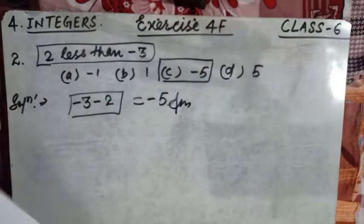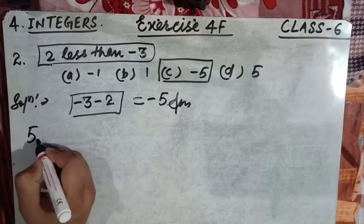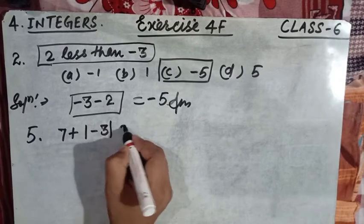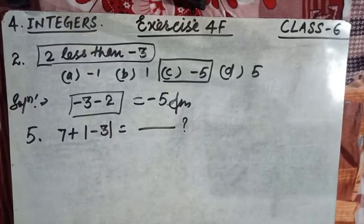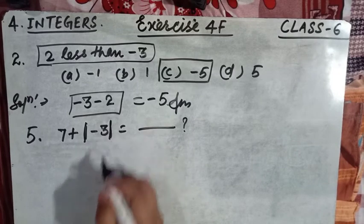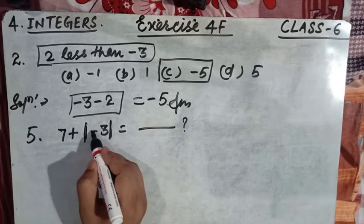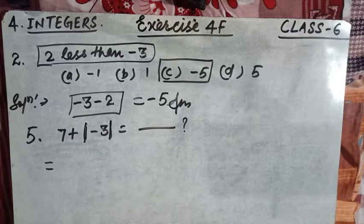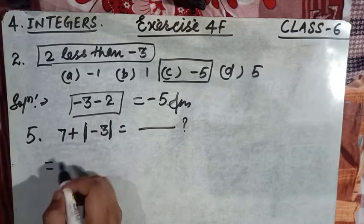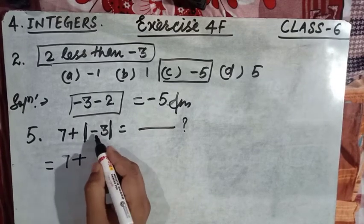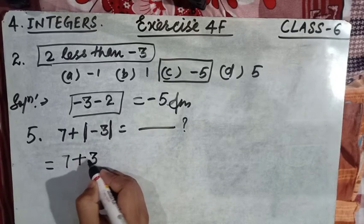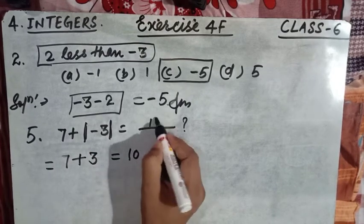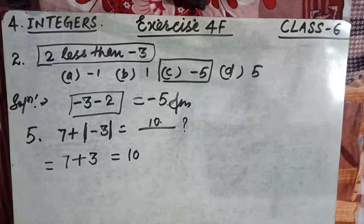Question number 5 says: seven plus the modulus of minus three. The numbers retained within two vertical bars represent the modulus. The modulus of any number always gives a positive value. So the modulus of minus three becomes plus three. Therefore, seven plus three equals ten. The answer is 10.